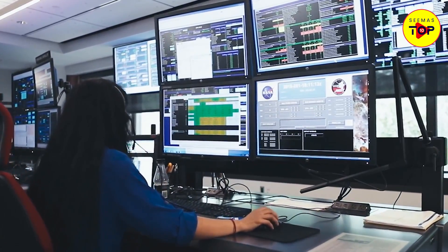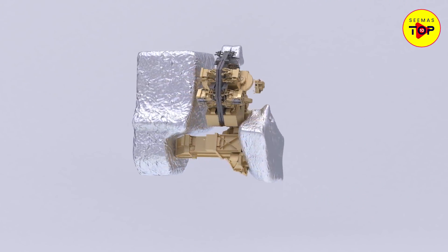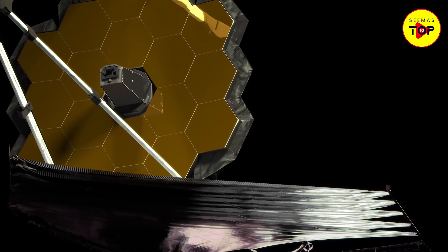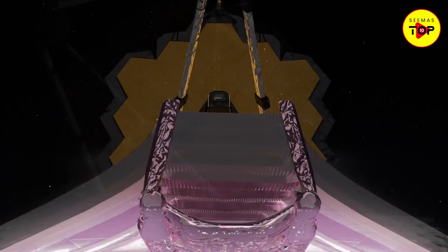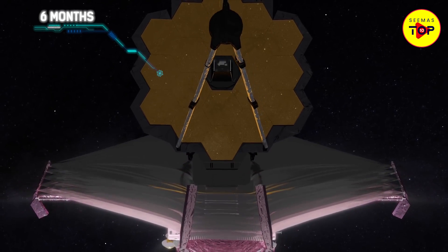During this time, the James Webb team will work towards optimizing all the instruments inside the telescope and the cameras. The process will take another three months, which is why the telescope will finally be ready for its science missions after six months.